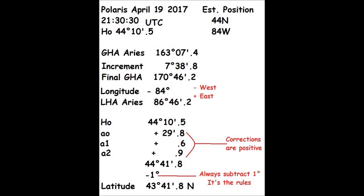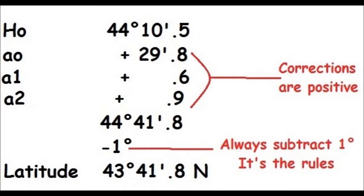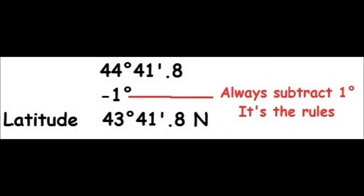Now we add all of those corrections to our HO, giving us 44° 41.8 minutes. But all of those corrections were positives, and in order for them to be positive, an extra degree was worked into the math, so we now subtract that. That gives us our latitude: 43° 41.8 minutes. And that's it — we're done. Simple, wasn't it?